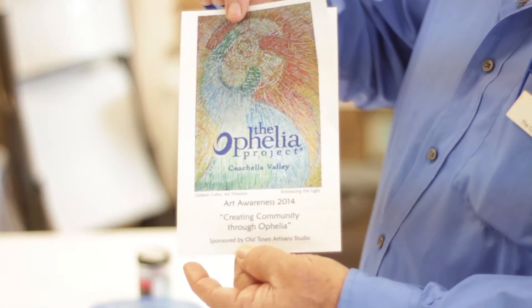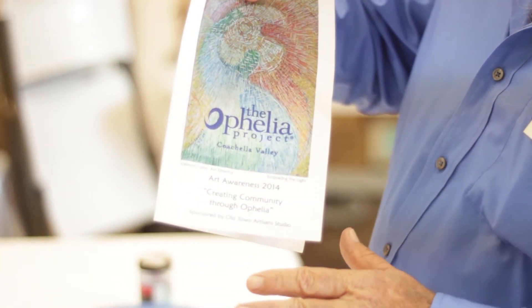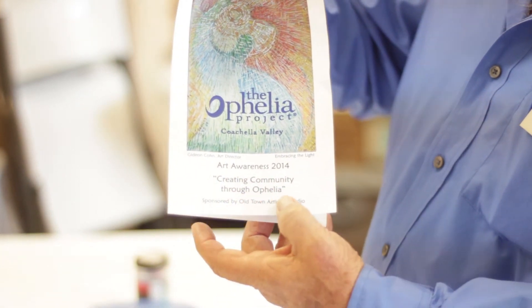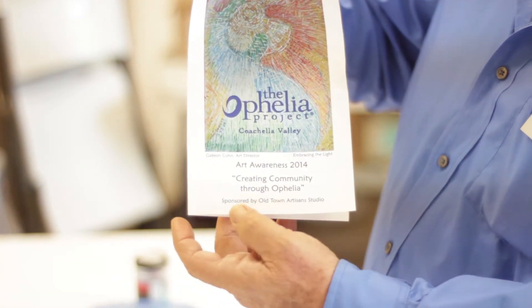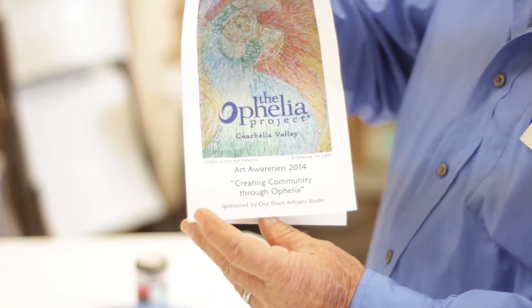This is a glasswork jewelry that you're going to create for someone else, for your Ophelia sister. Each one of you will receive these pamphlets. This pamphlet shows the project, the name of the project is Creating Community Through Ophelia, as you can see here. It's sponsored by Old Town Artisan Studio, which you will see in a moment.